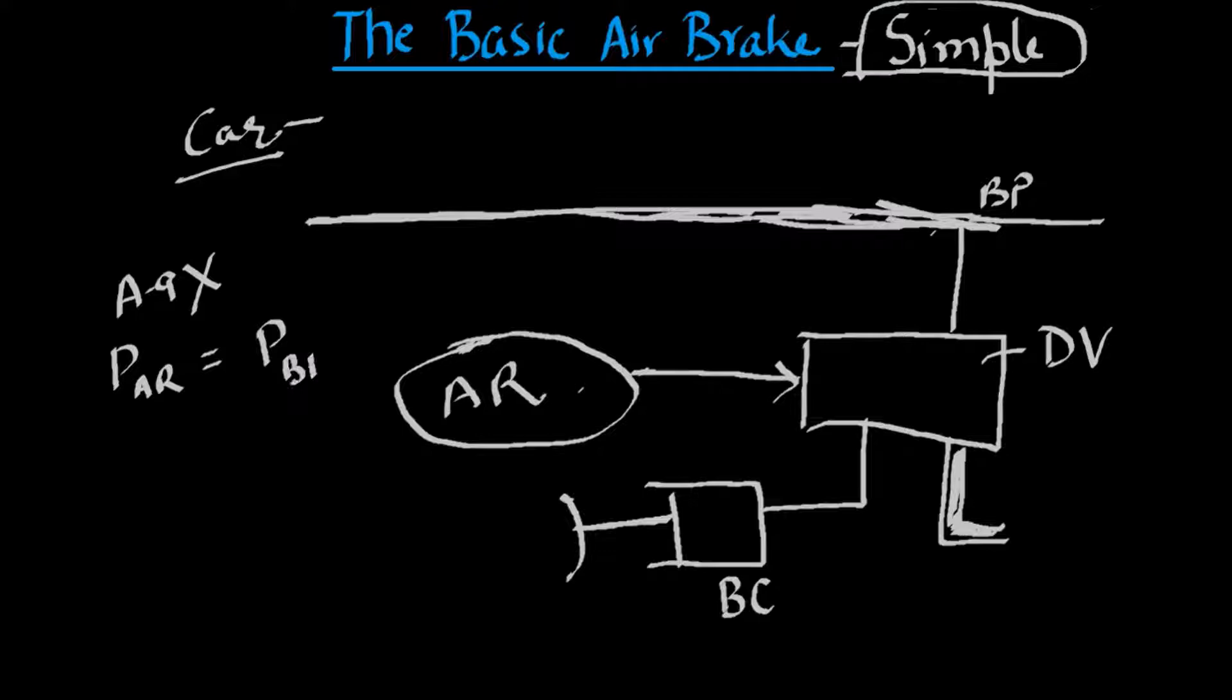The DV keeps on comparing the pressures in the AR and the BP. As soon as the BP pressure falls, a slider mechanism in the DV operates. Basically, pushed by the AR pressure which is now in excess from the BP pressure. This causes the AR to get connected to the brake cylinder or the BC.